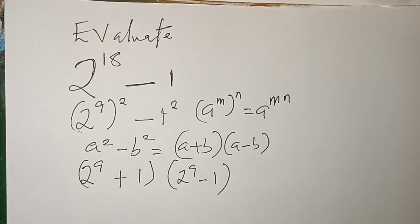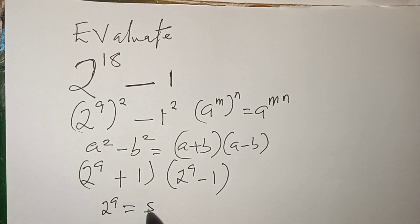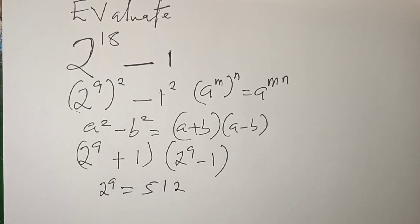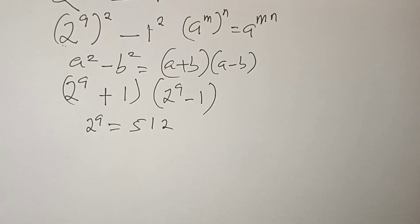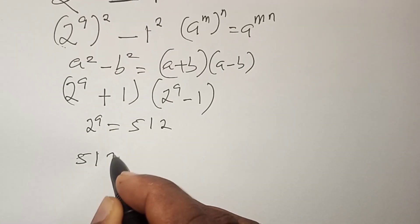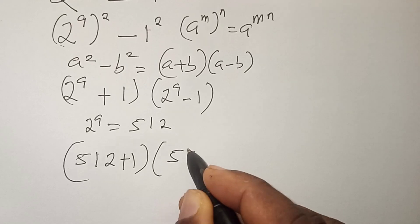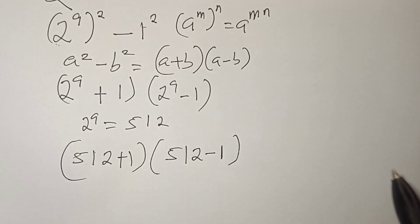From this, we have 2 raised to the power 9 equals 512. So with this, we can have 512 plus 1 times 512 minus 1.